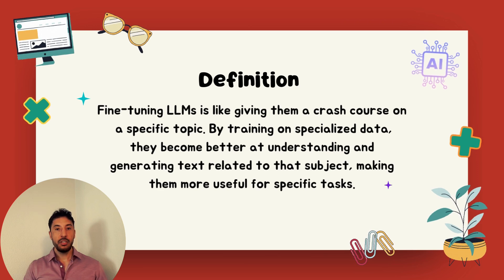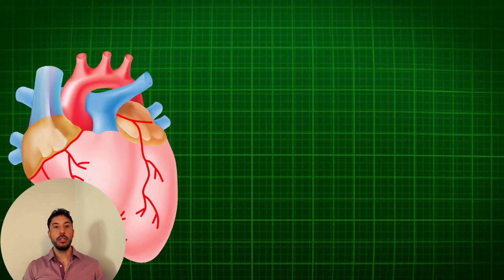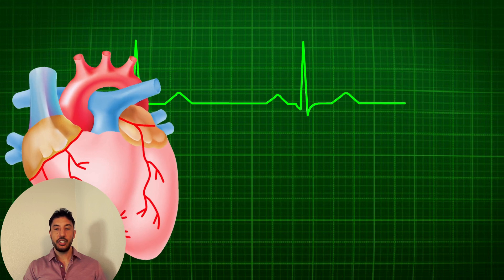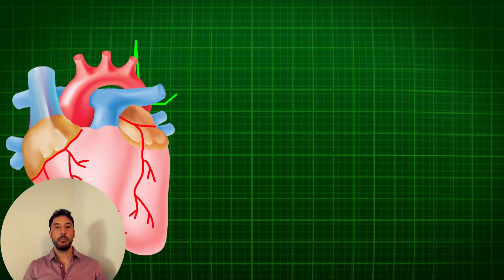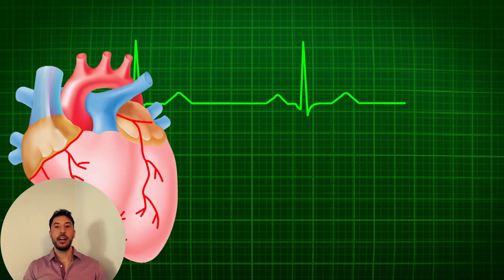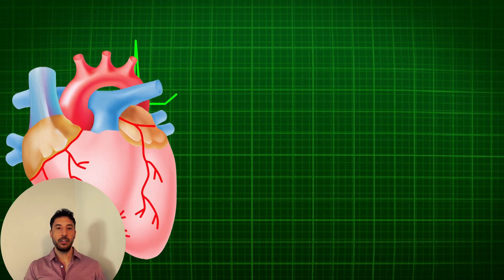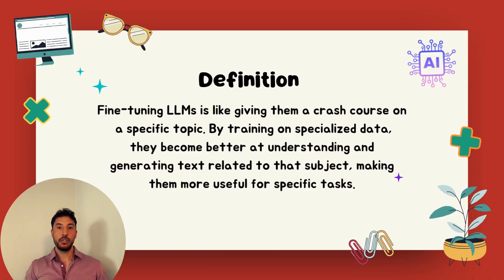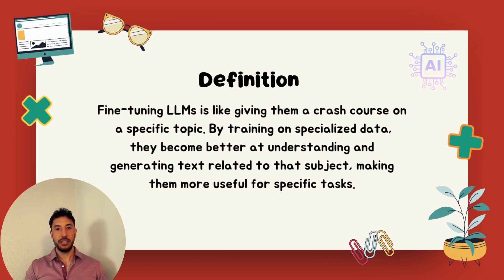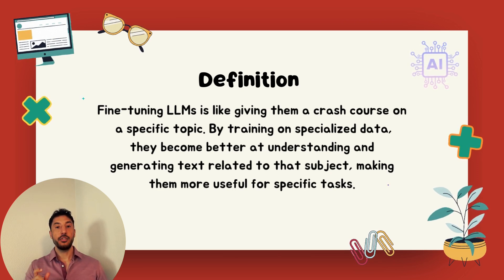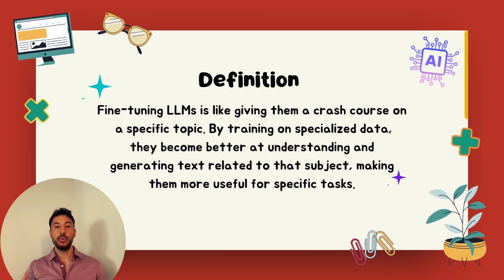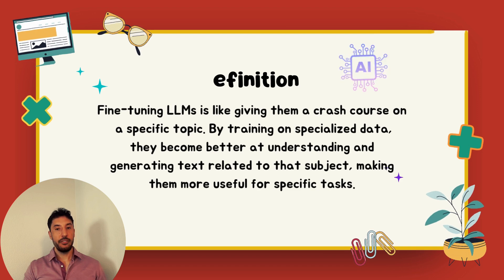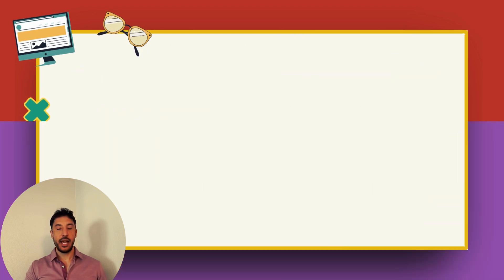For example, if the model is being fine-tuned to provide medical advice, it would be trained on medical textbooks, patient consultations, and other relevant medical texts. This helps the model become more adept at understanding and generating text related to the medical field, improving its performance for those specific types of queries. The broad foundation acquired during pre-training is crucial for overall competency, but it's focused fine-tuning in a specific domain that enables the model to excel in particular areas, making it more effective and efficient for specific tasks.